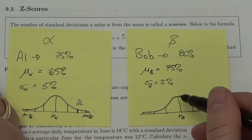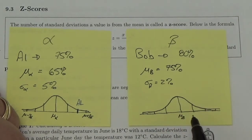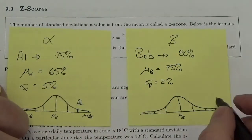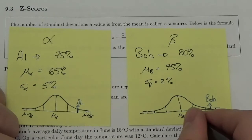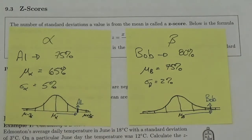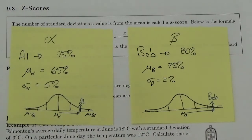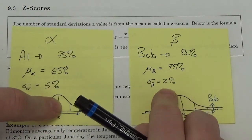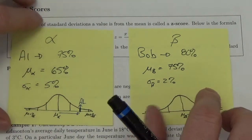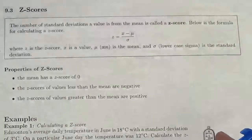Now looking at Bob: the mean is 75% and the standard deviation is 2%, so two percent up from 75 is 77, then 79 — Bob is actually more standard deviations above the mean than Al is. So Bob has done better overall. Bob did better in comparison to his group than Al did in comparison to his group. Knowing their marks isn't enough, knowing the class average isn't enough — you also need to know the standard deviation, the spread of the data. And that is what leads us to the z-score.